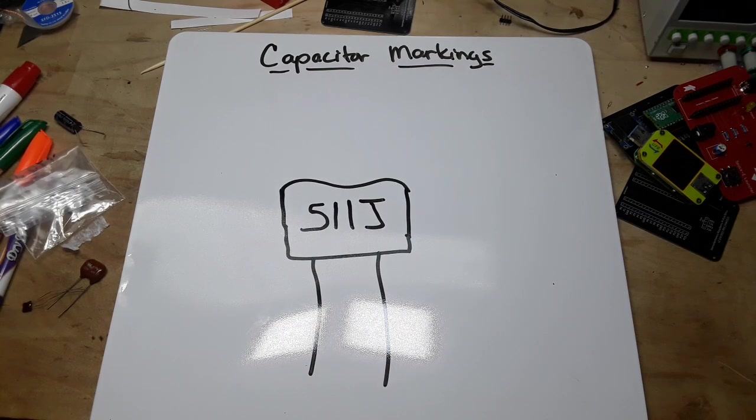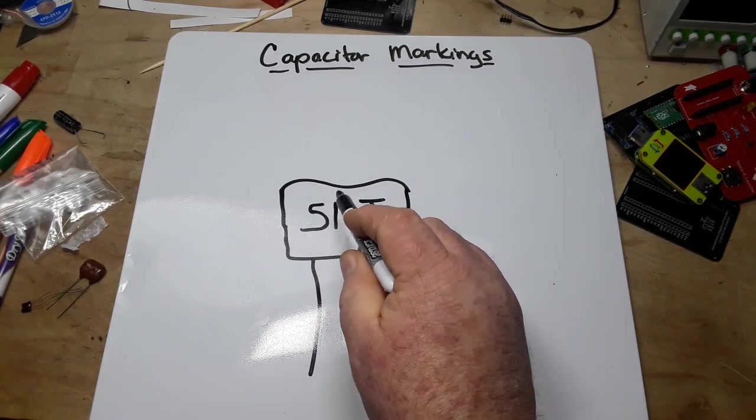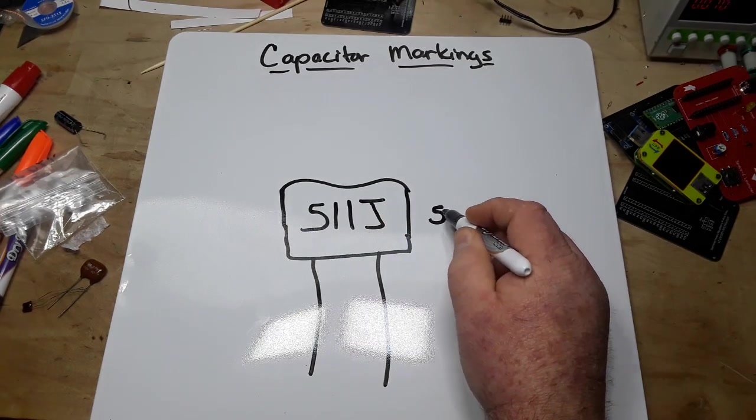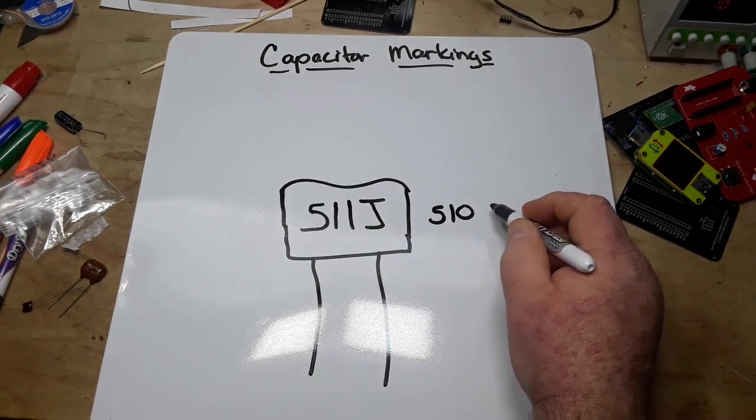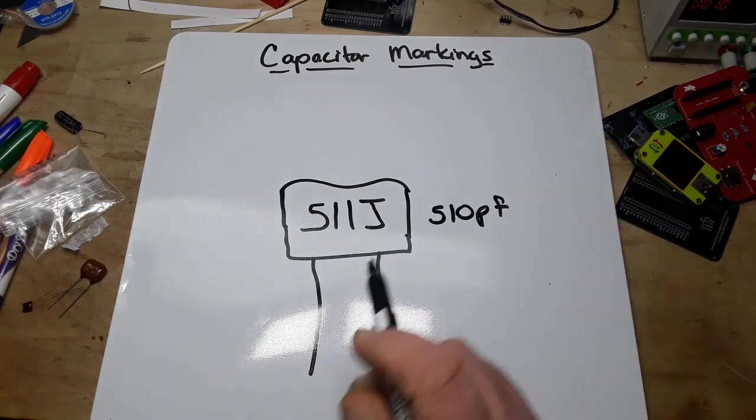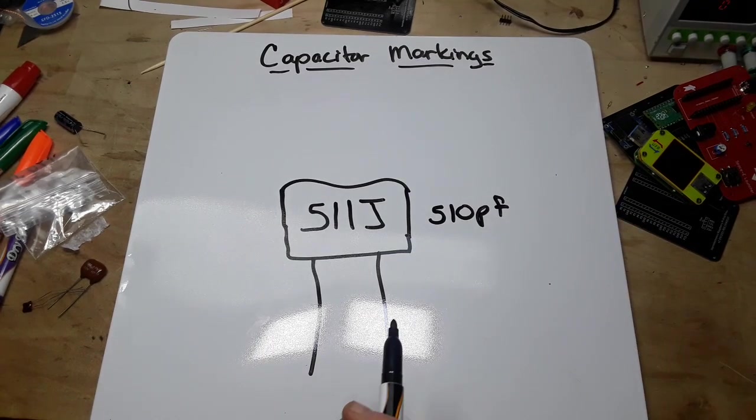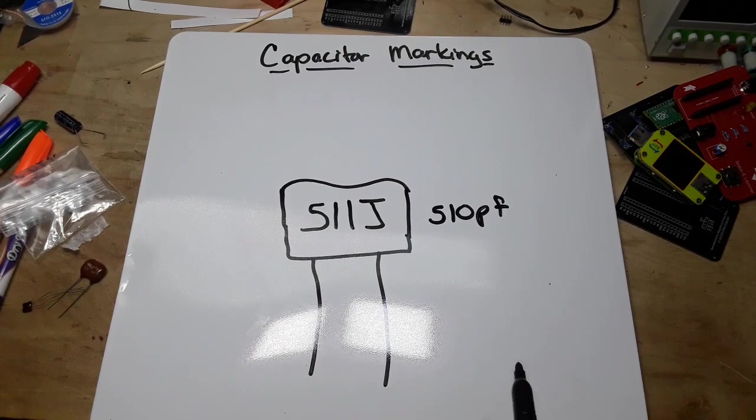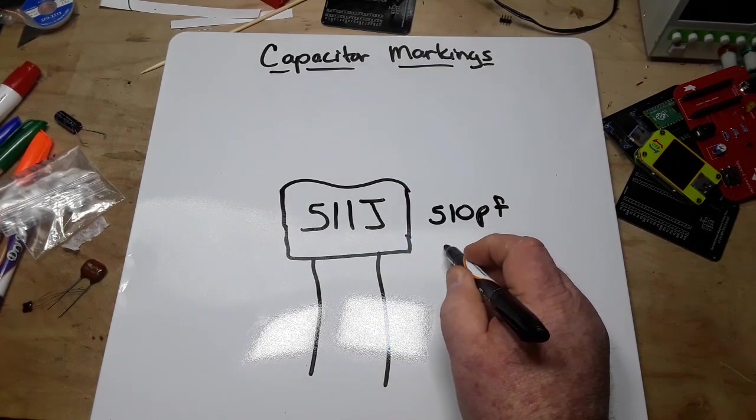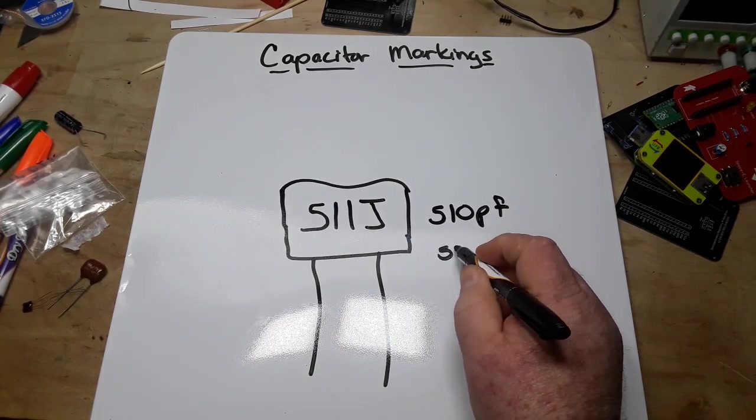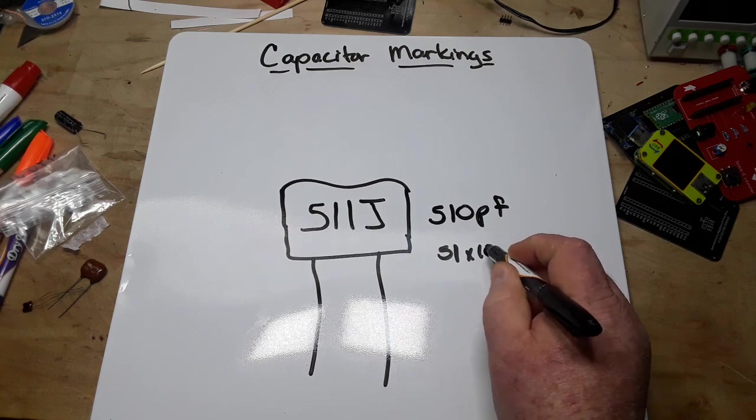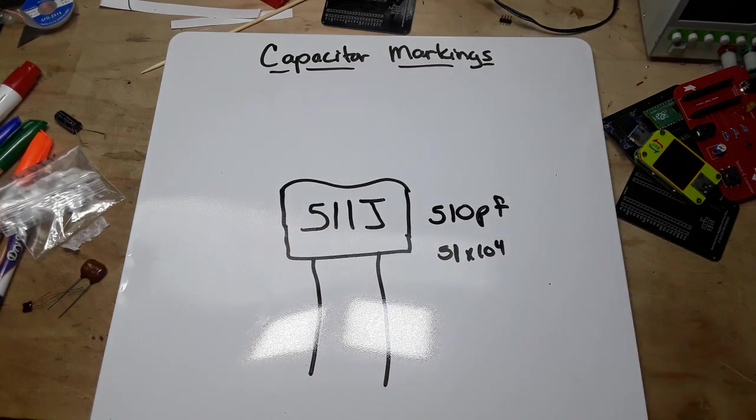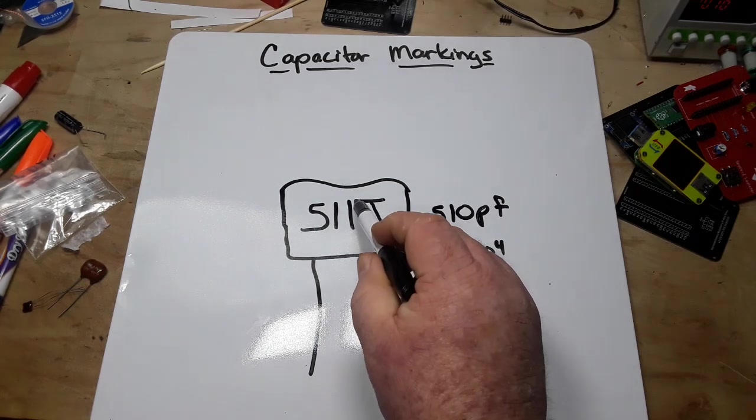Okay, so we have 511J which is equal to 510 picofarad. Why? Well, we just have to multiply the numbers out. That would be 51 times 10 to the 1st, or 510 picofarad.